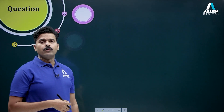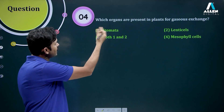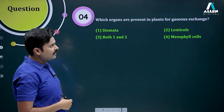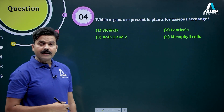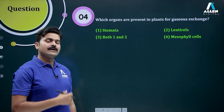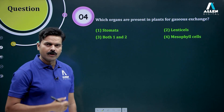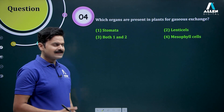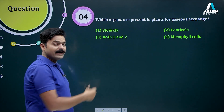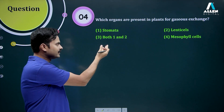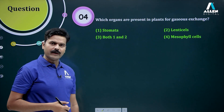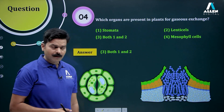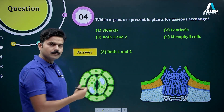Question number four: which organs are present in plants for gaseous exchange? Is it (1) stomata, (2) lenticels, (3) both stomata and lenticels, or (4) something else? Both stomata and lenticels are correct, so our answer is option number three — both one and two.